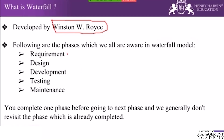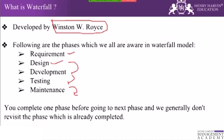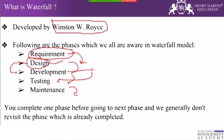In waterfall, the overall project is spanned in a particular duration and you complete one phase before moving to the next. For example, you stay in the requirements phase until it is frozen before moving to design. Once design is complete you move to development, then to testing once development is done, and once testing is signed off it moves to maintenance mode. This phased approach is one disadvantage of waterfall.